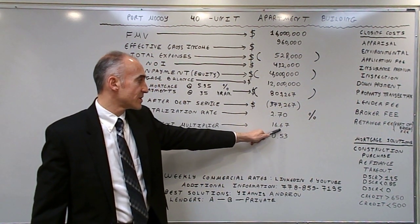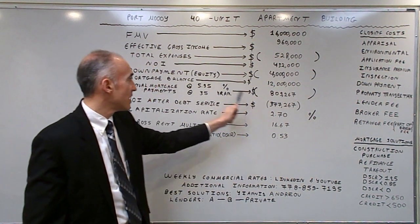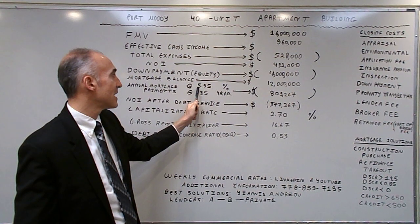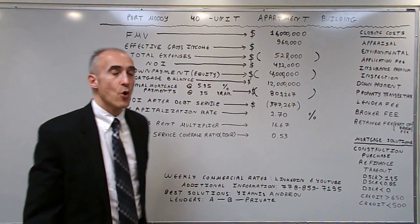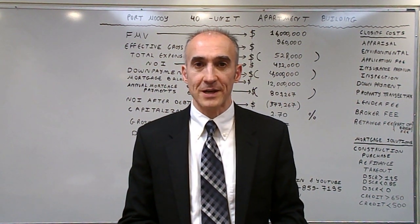16.67 is the gross rate multiplier and 0.53 is the debt service coverage ratio that yields a rate by a private lender of 5.900% over 35 years based on mitigating factors and the net worth of the applicant.